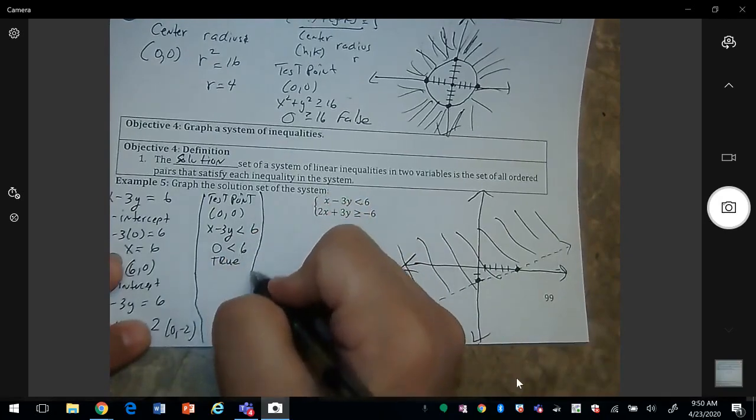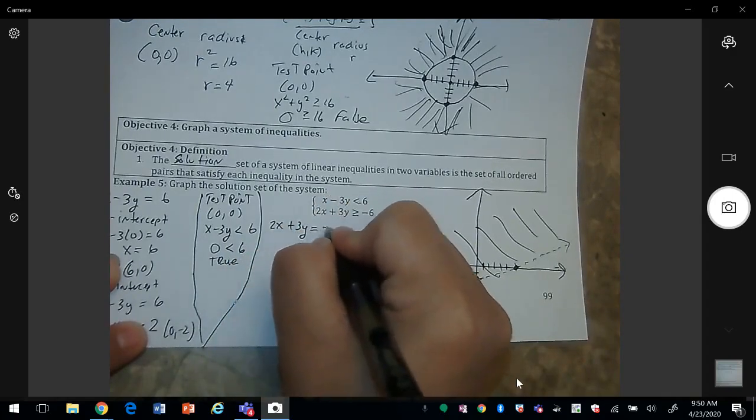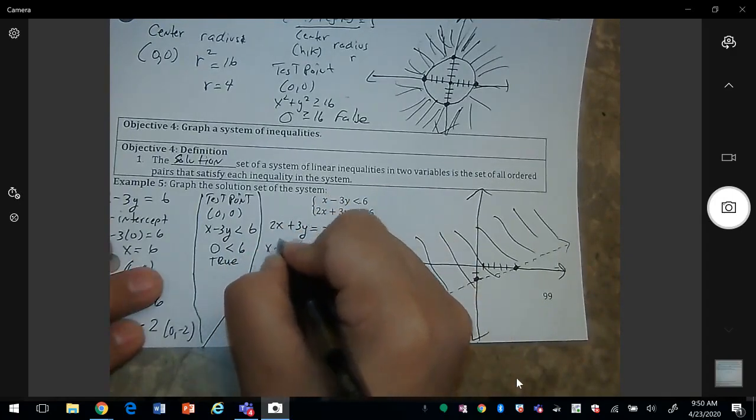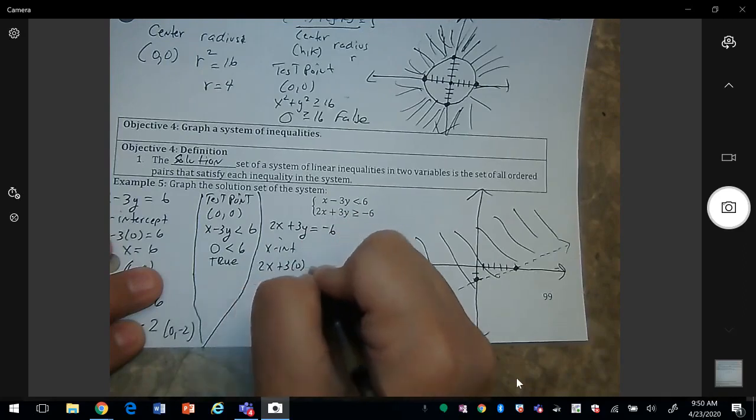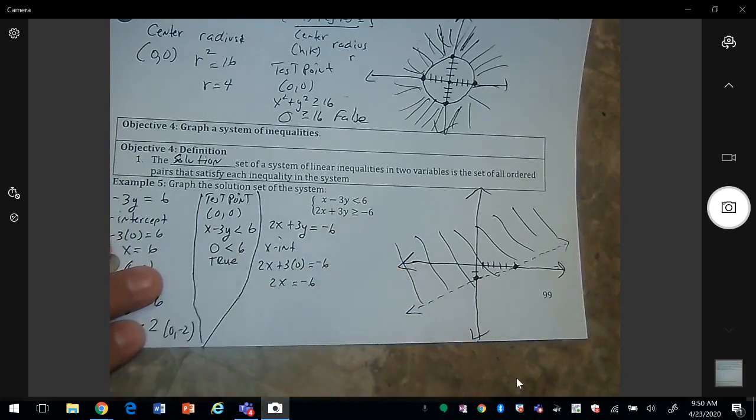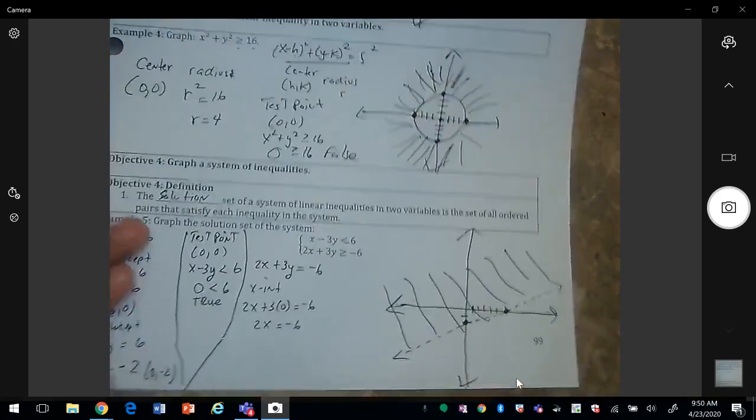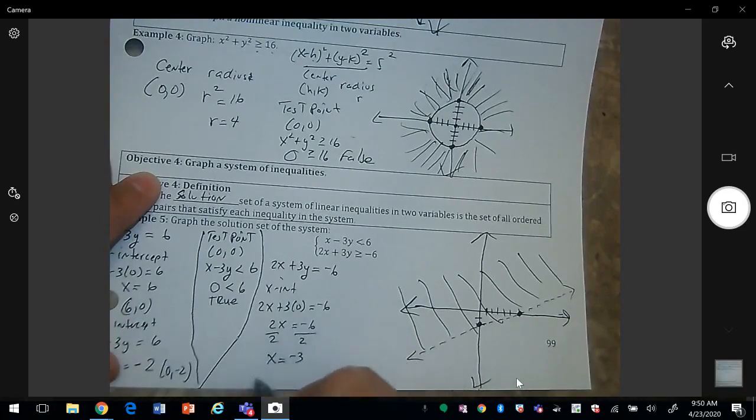Then we want to graph the next equation. So I'm going to use my x-intercept, then y equal to 0. So divide by 2. So x is negative 3.